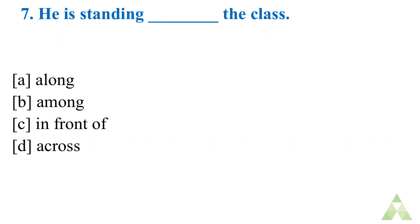Now let's move on to the final question. Question number seven. He is standing dash the class. Option A, along. Option B, among. Option C, in front of. Option D, across. So, quickly write down. So, along means in one side. But from one end to the other. Among means, when we are speaking of so many person or so many things. In front of means, before. Across means, as we have discussed in the previous question, that from one side to another. So, what will be the right answer?